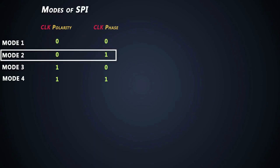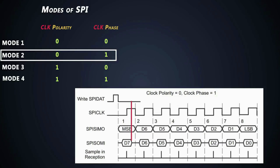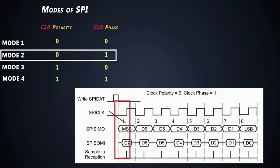In the second mode, where clock polarity is zero and clock phase is one, the SPI clock starts after some delay and data is output one half cycle before the first rising edge of the SPI clock. This input data is latched on the rising edge of the SPI clock, and later the data is again output on the subsequent falling edges of the clock.